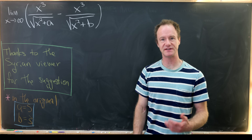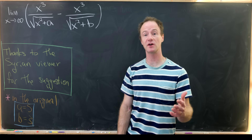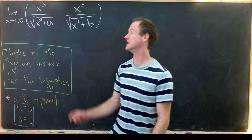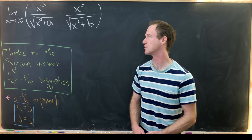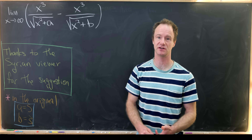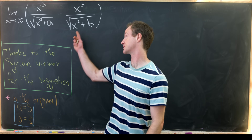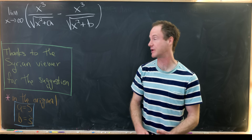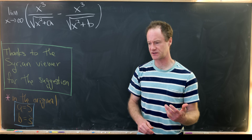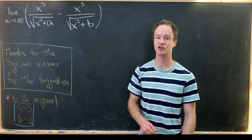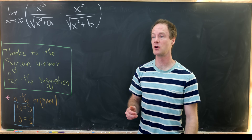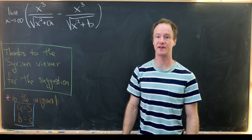Let's see how we could do this. Notice it's an indeterminate form — we have an infinity minus infinity indeterminate form. That's because the degree of the numerator is larger than the degree of the denominator in each of those expressions. It's not quite a rational expression because we have a radical in the denominator, but it's close enough. So we probably want to do some simplification to get this into a more manageable indeterminate form.